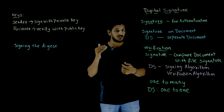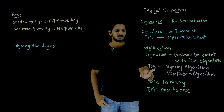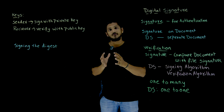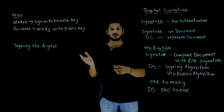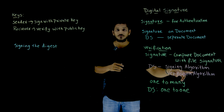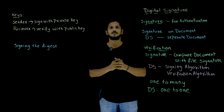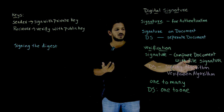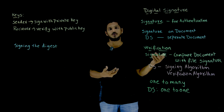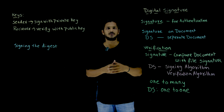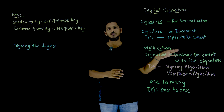But in digital signatures this is not how it works. In digital signatures, there should be a separate signing algorithm on the sender side and a verification algorithm on the receiver side. What is this signing algorithm? What is this verification algorithm? How many different ways are there for digital signatures? All these concepts we are going to discuss in our coming classes.